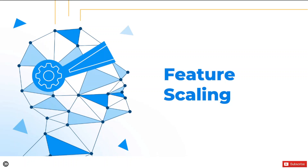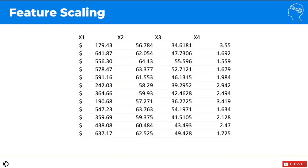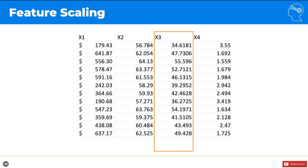Before we dive into the technical aspects of feature scaling, I would like to present you with an image that will help you remember what feature scaling is applied to. Even without knowing anything about feature scaling, please remember that feature scaling is always applied to columns — to this column, to this column, to this column. Feature scaling is never applied across columns, so you wouldn't apply feature scaling to data inside a row. Feature scaling is always applied to columns.